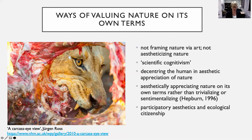Scientific cognitivism also tries to find ways in which we can appreciate nature on its own terms, largely through natural history, using scientific knowledge to guide our judgments and making sure we make judgments in an appropriate and not misinformed way — avoiding anthropomorphizing that could pervert our appreciation. Generally, decentering the human in aesthetic appreciation of nature. Most philosophers working in environmental aesthetics do not consider our aesthetic judgments of environment to be anthropocentric, but they do consider them to be anthropogenic.